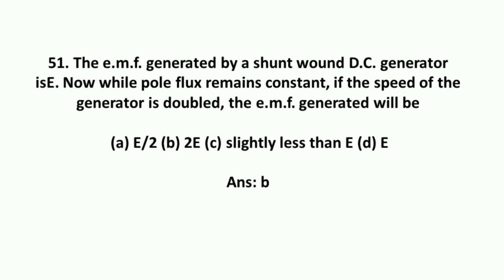The EMF generated by a shunt-wound DC generator is E. Now while pole flux remains constant, if the speed of the generator is doubled, the EMF generated will be 2E.